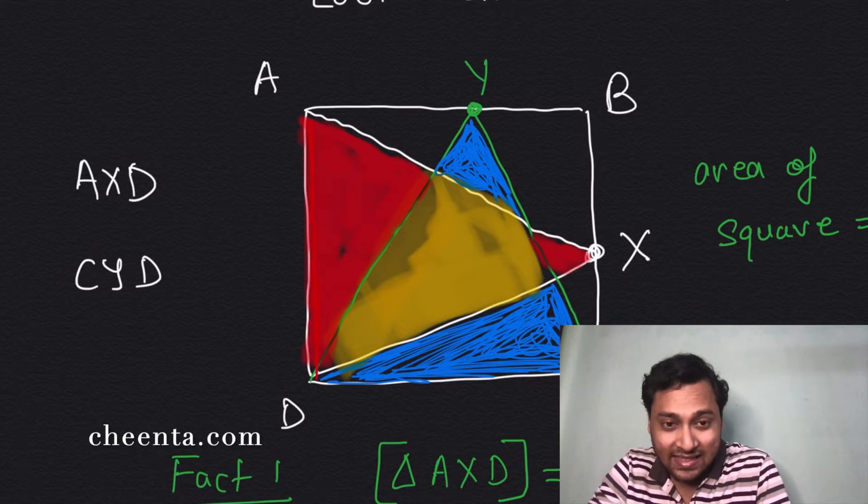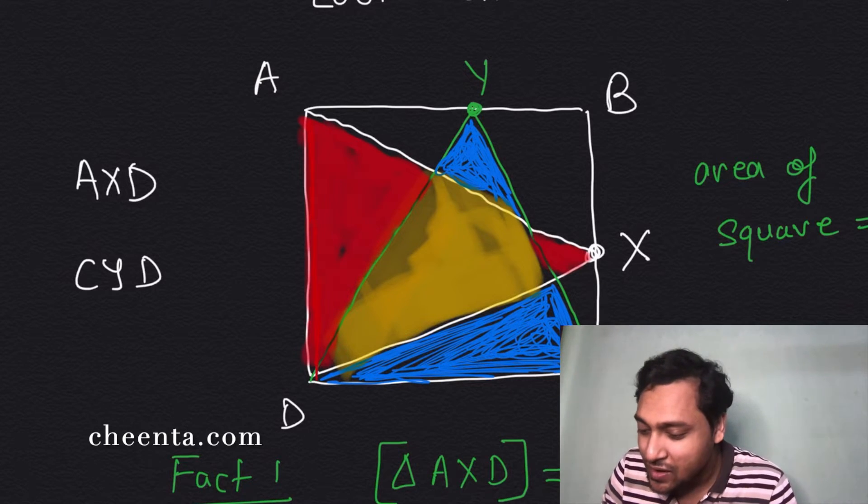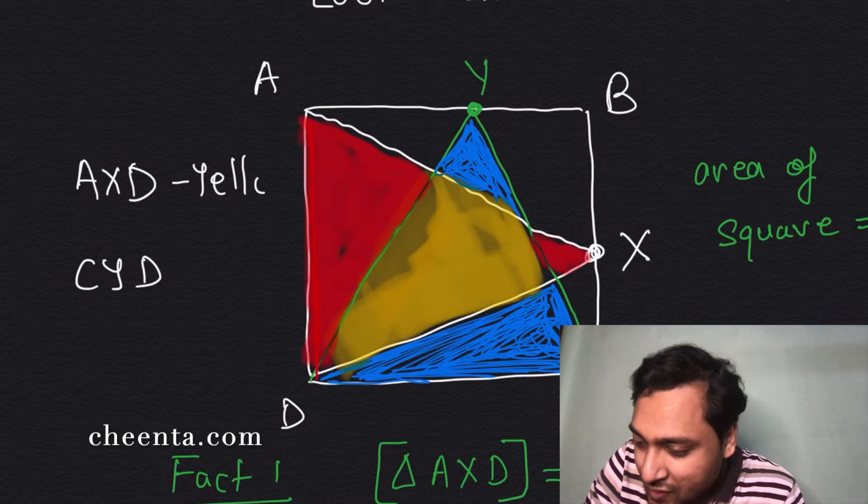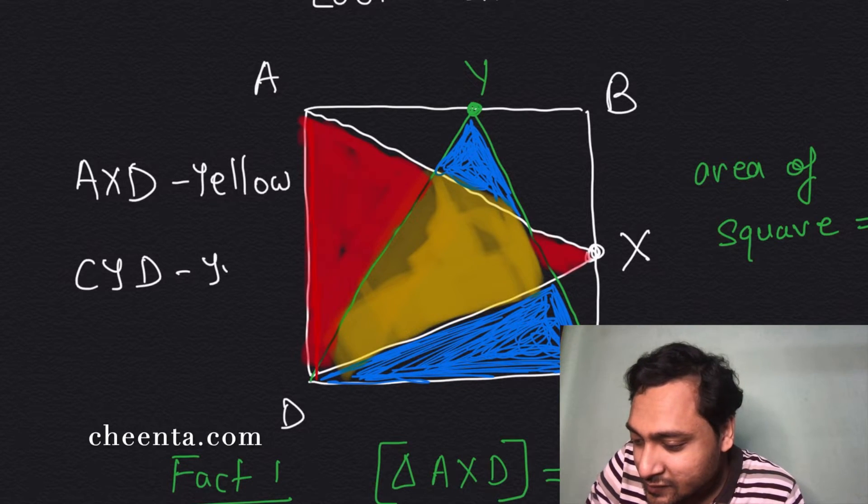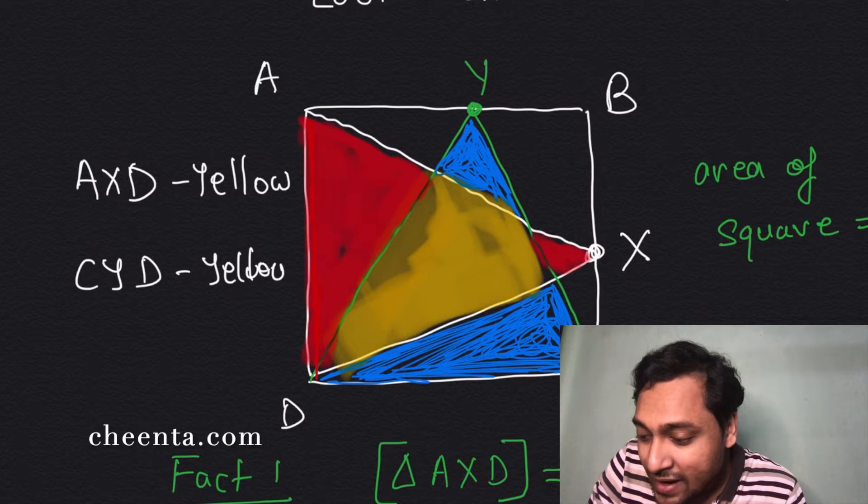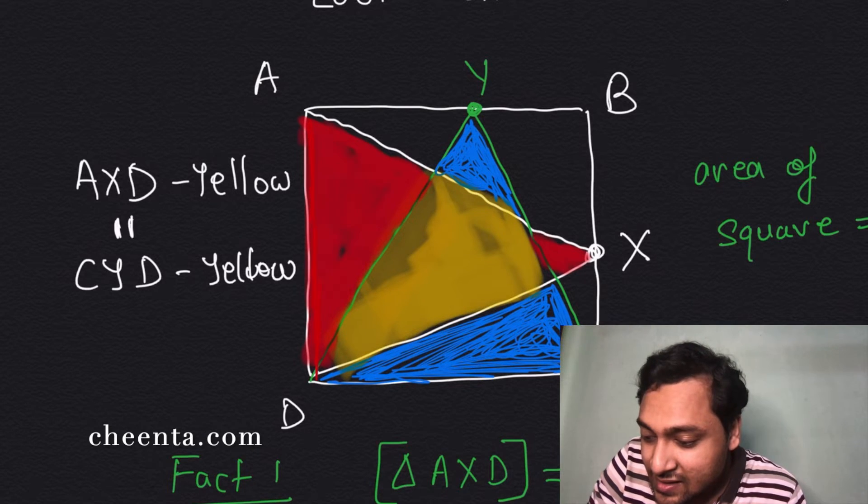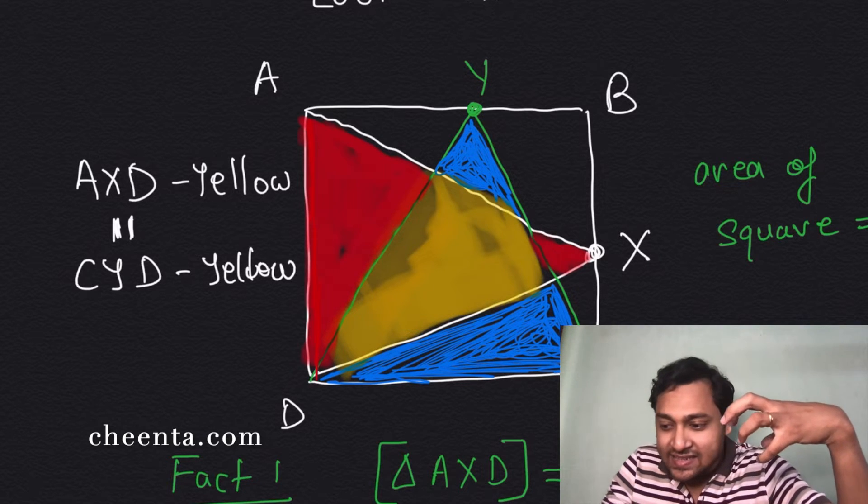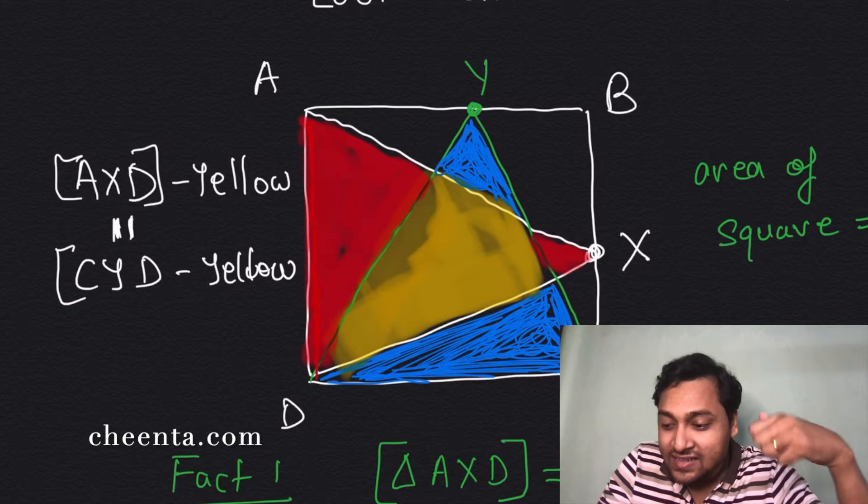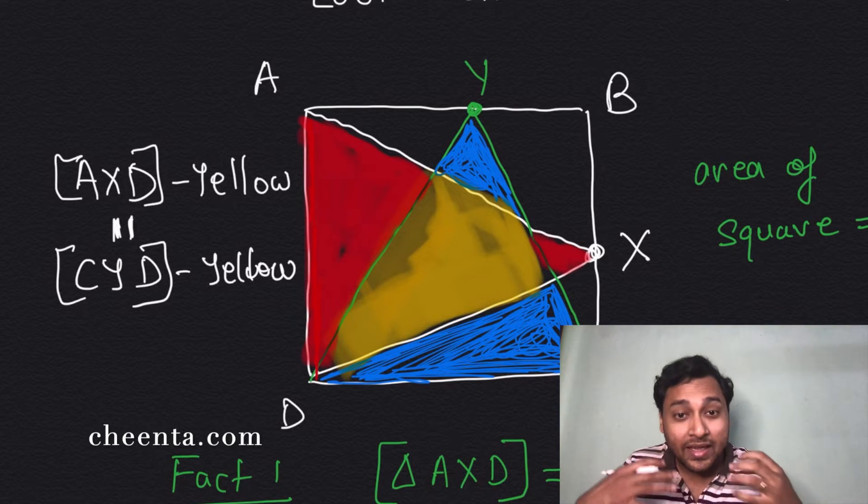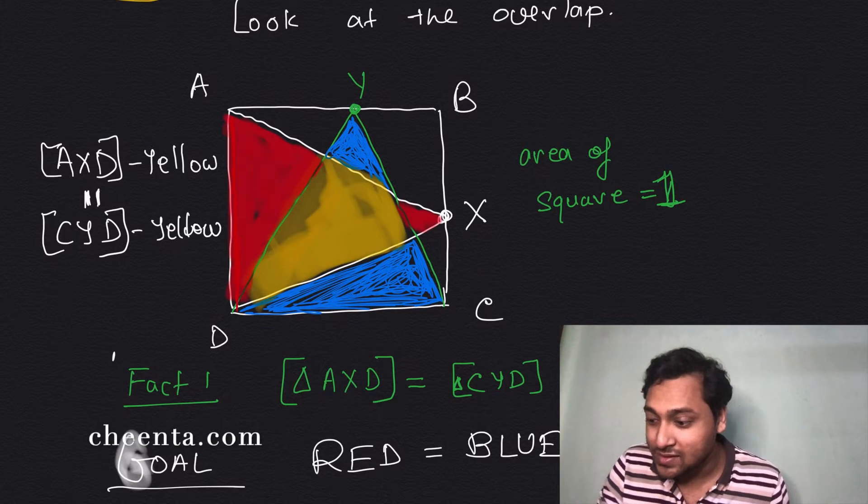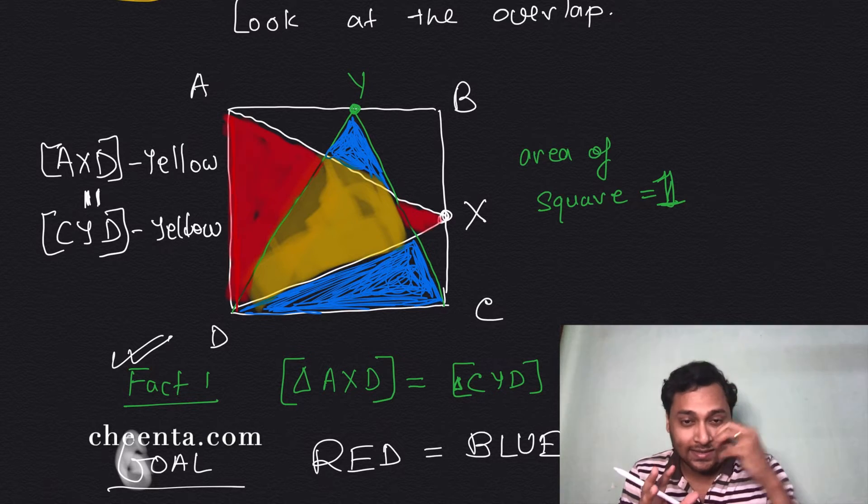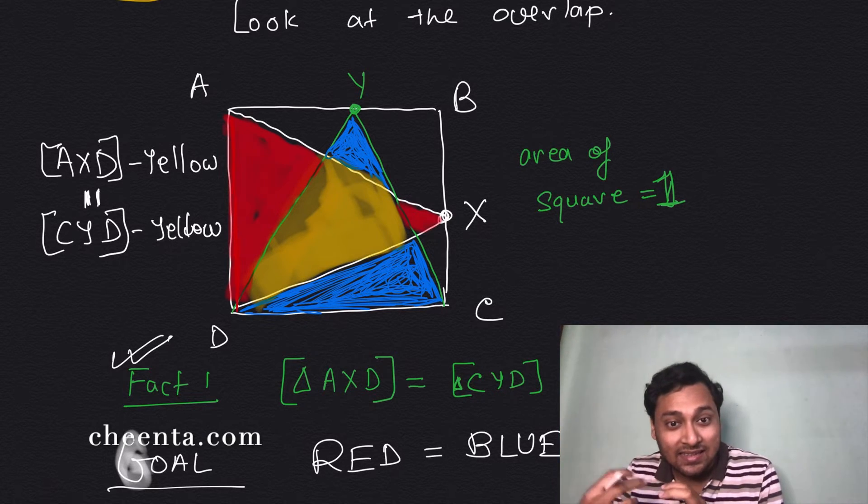So if we subtract yellow from both of them, whatever remains still remains equal, right? Because AXD's area and CYD's area were initially equal, that was fact one. Now from both of these equal quantities I am subtracting the yellow region, that is the yellow area, so it still remains equal.